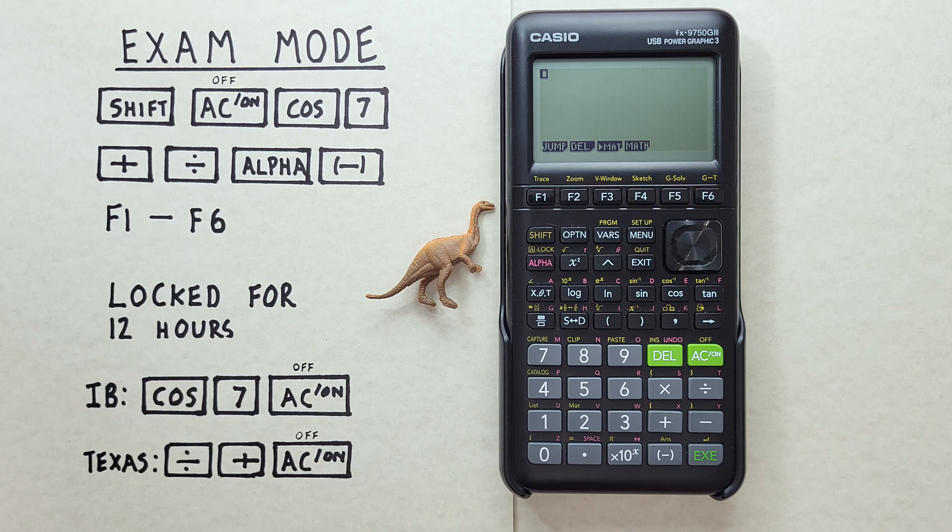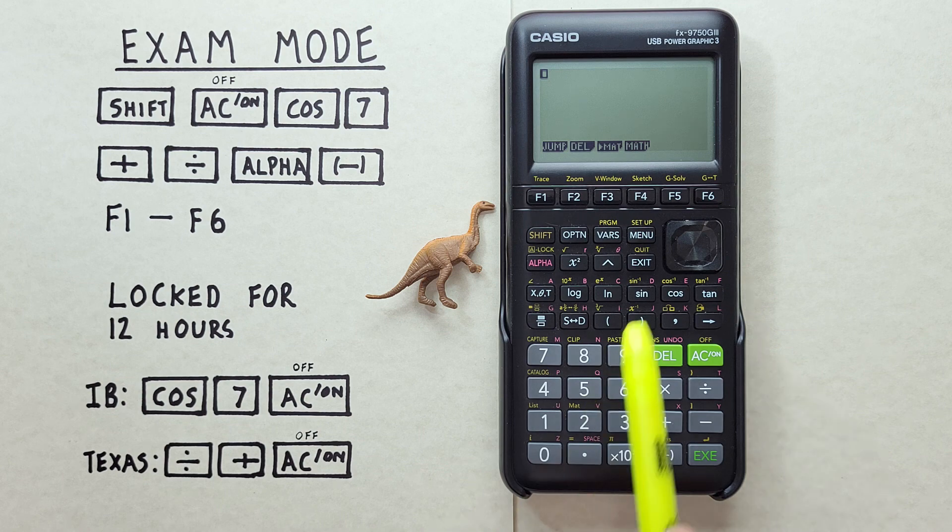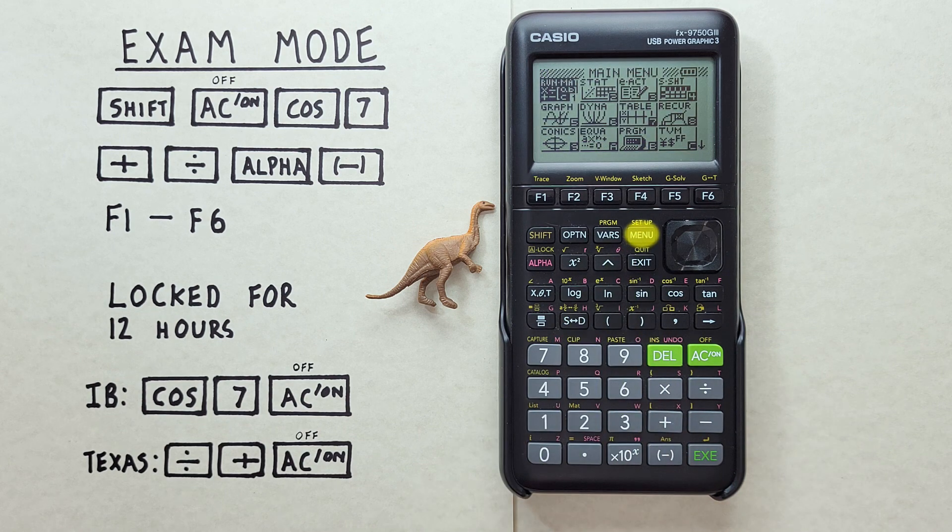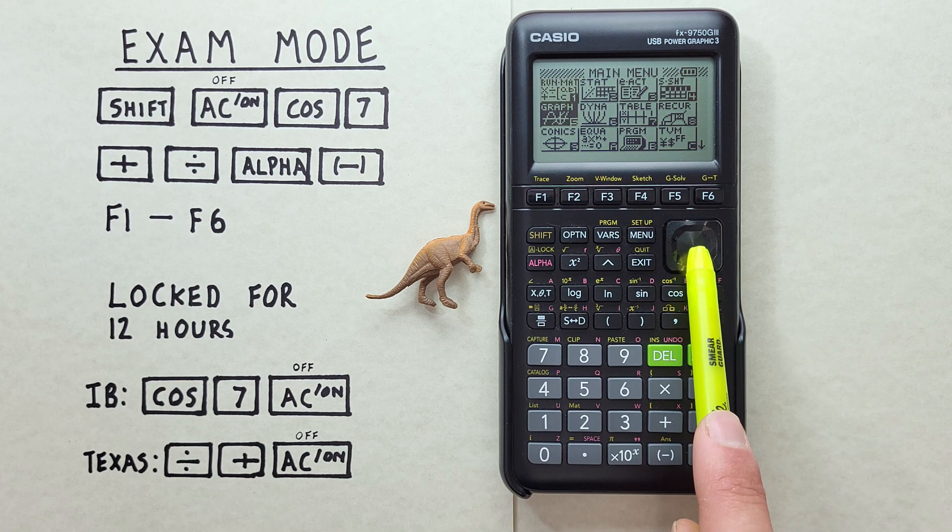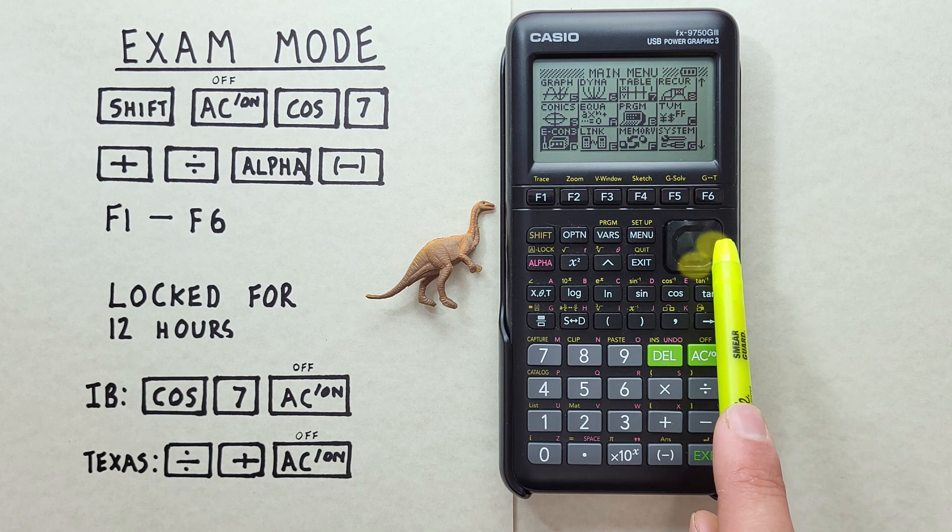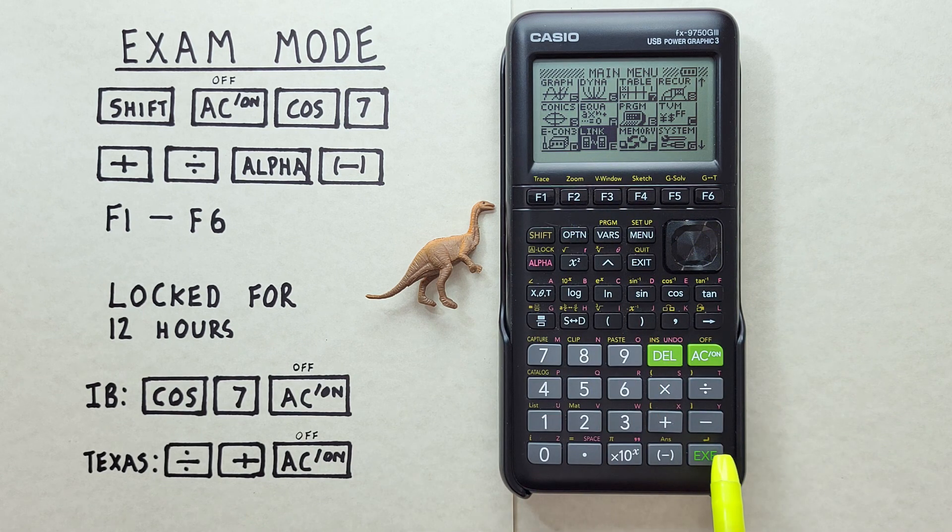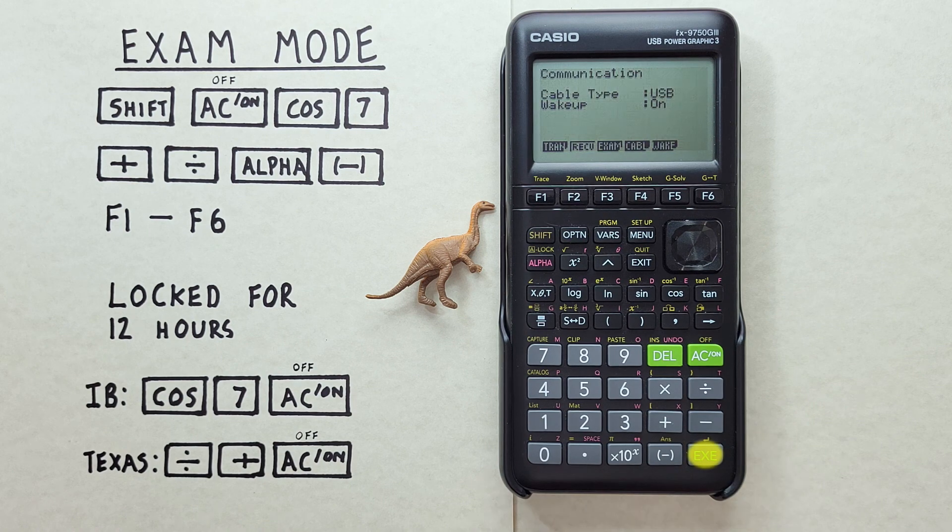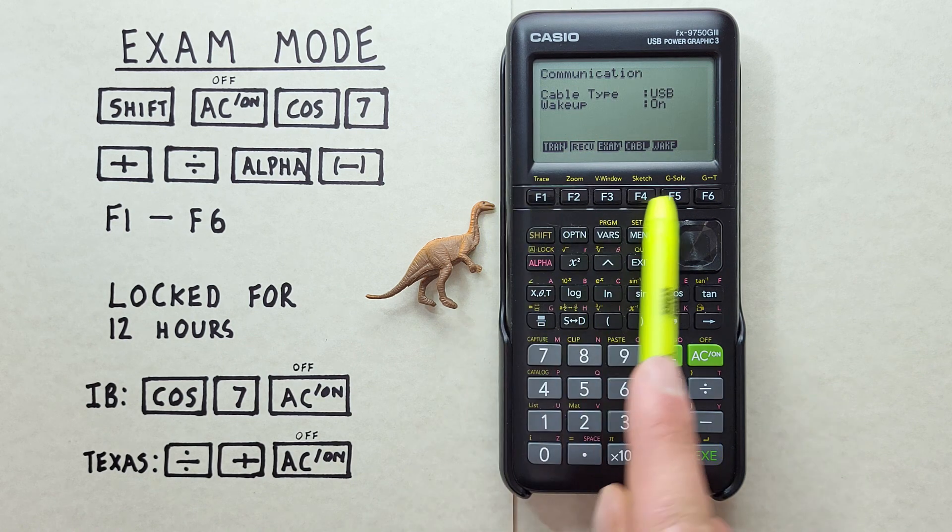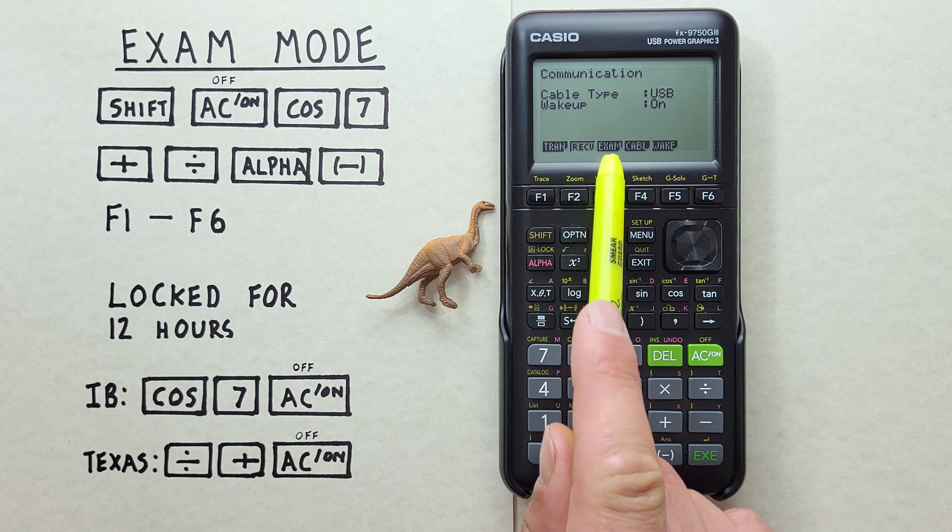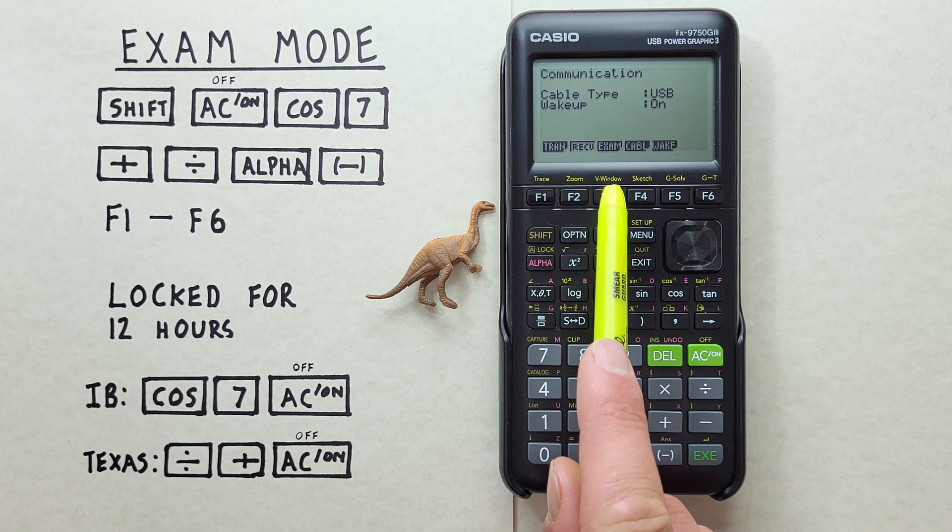If you're using this calculator, your teacher may ask you to put it in exam mode when you're getting ready to take a test. To see the different types of exam mode on this calculator, we need to go to Menu, and then scroll down and over to Link. Highlight it, and then hit the EXE key. That'll bring us to this screen here, and then we want Exam Mode option, so we hit F3.